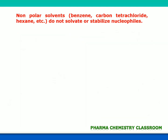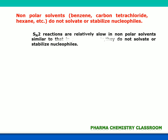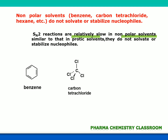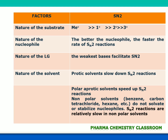Non-polar solvents like benzene, carbon tetrachloride, and hexane do not solvate or stabilize nucleophiles. That is why SN2 reactions are relatively slow in non-polar solvents.